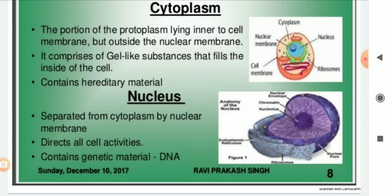The cytoplasm is the portion of protoplasm lying inner to the cell membrane but outside the nuclear membrane. It is made up of a gel-like substance that fills the inside of the cell. It contains hereditary material — the kind of material that passes information from the parents to us.